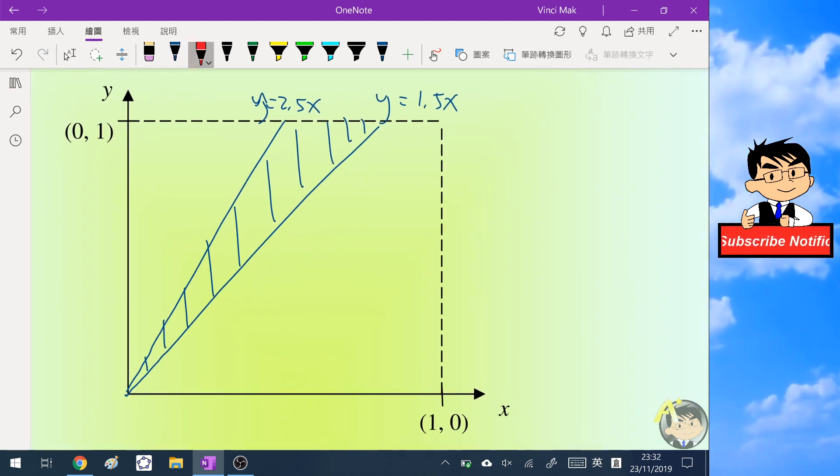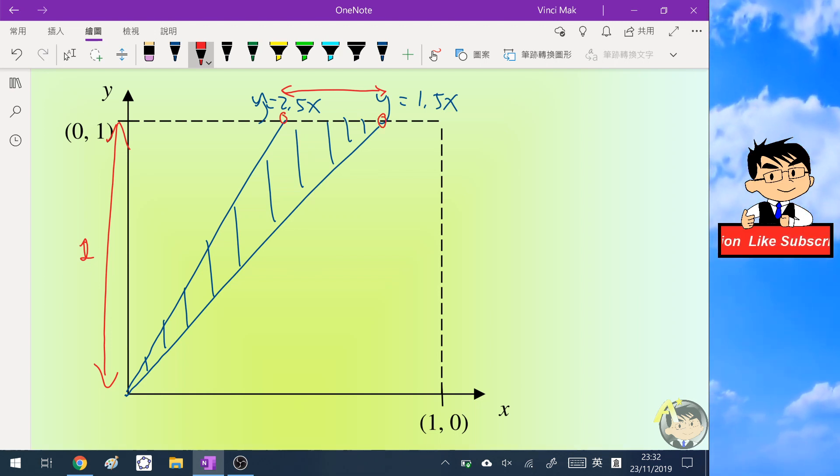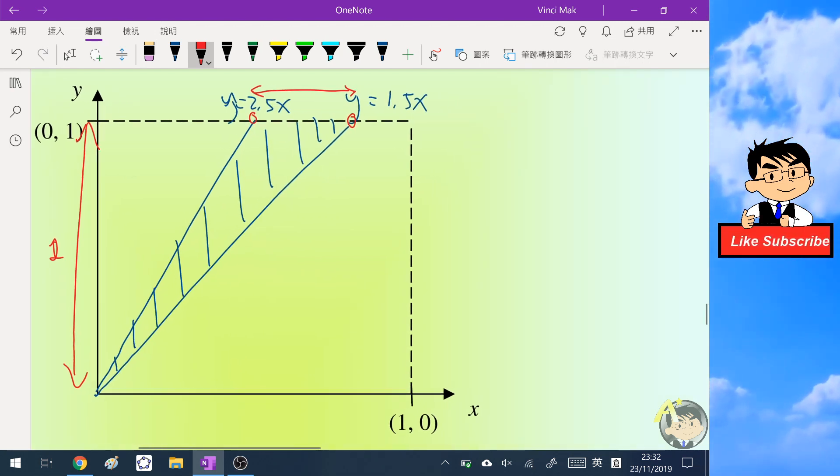We need to find the height, which is one, and we need to find the base of this triangle. So we now need to find the coordinates of these two points, which is easy. We just need to put y equals 1 into both equations. So for the first equation we'll get 1 equals 2.5x.